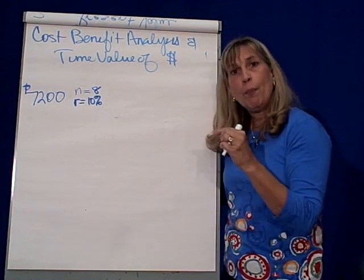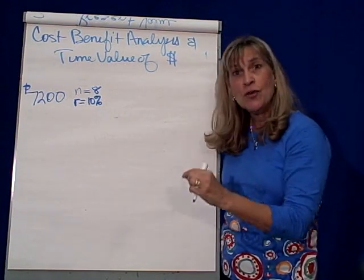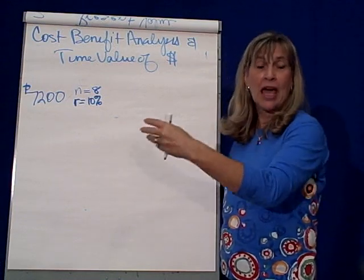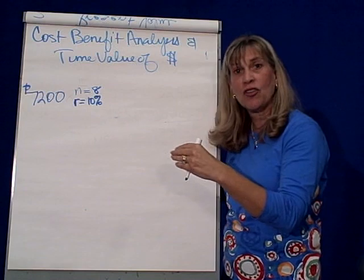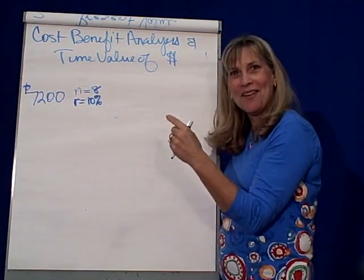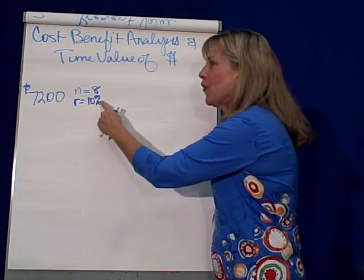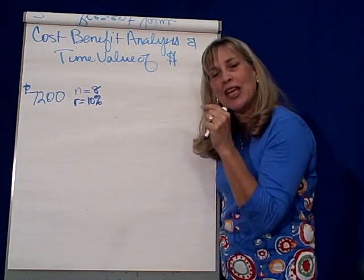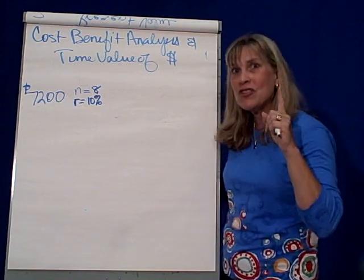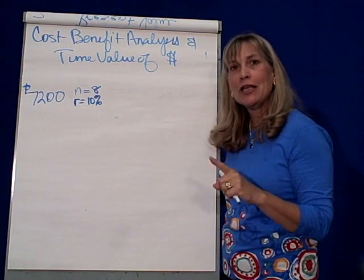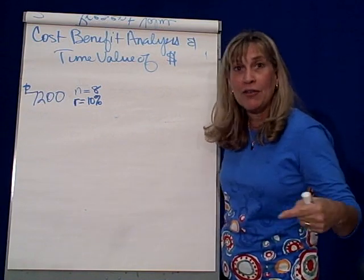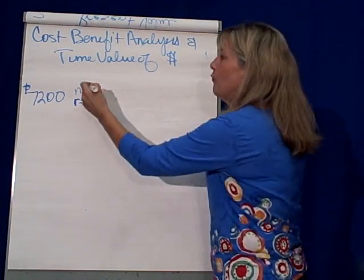Since that cash flow benefit is an annual benefit — in other words, its cash inflows versus cash expenditures are going to make me better off by $7,200 over the next eight years — which present value table will I use? Will I use table three, which is a single sum, or will I use table four, which is the annuity or the multiple benefits or payments? We'll use table four.